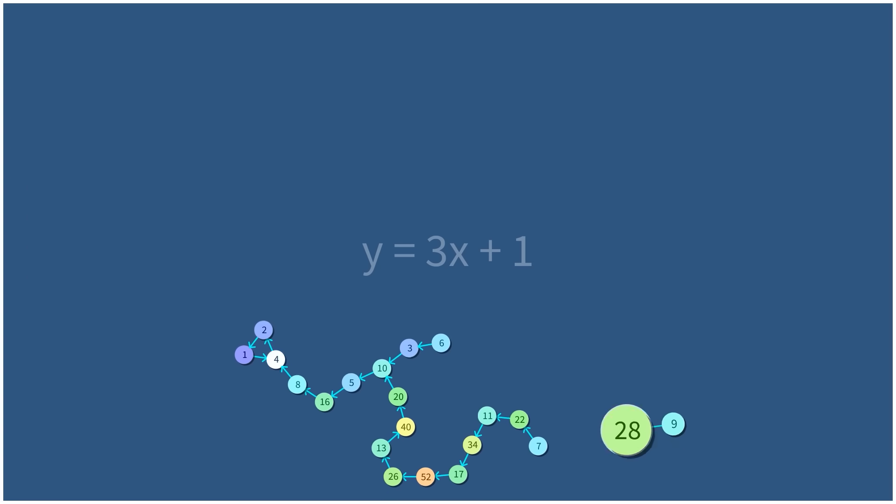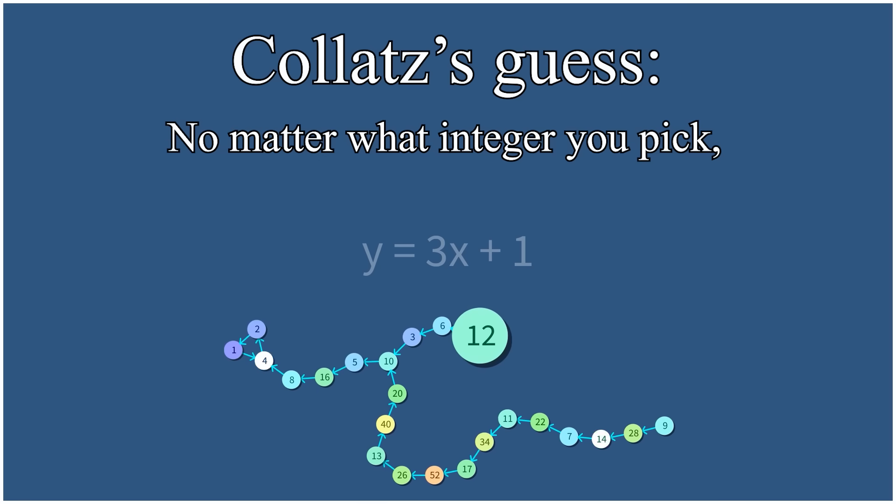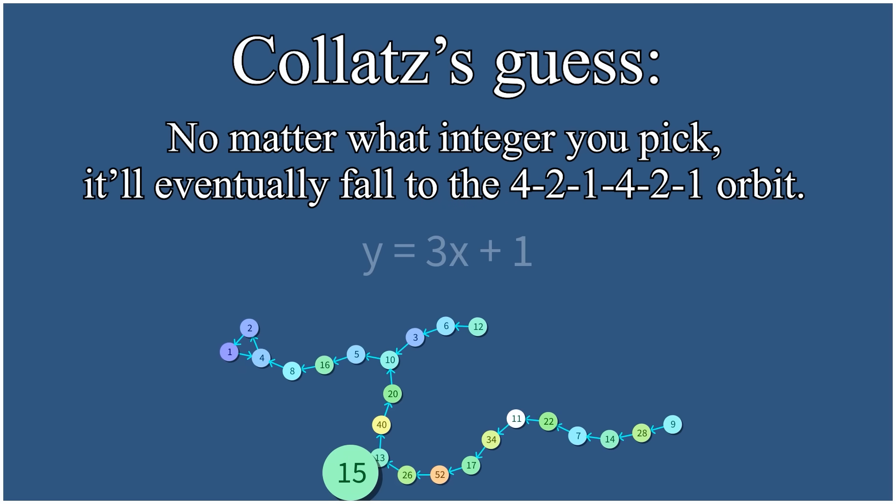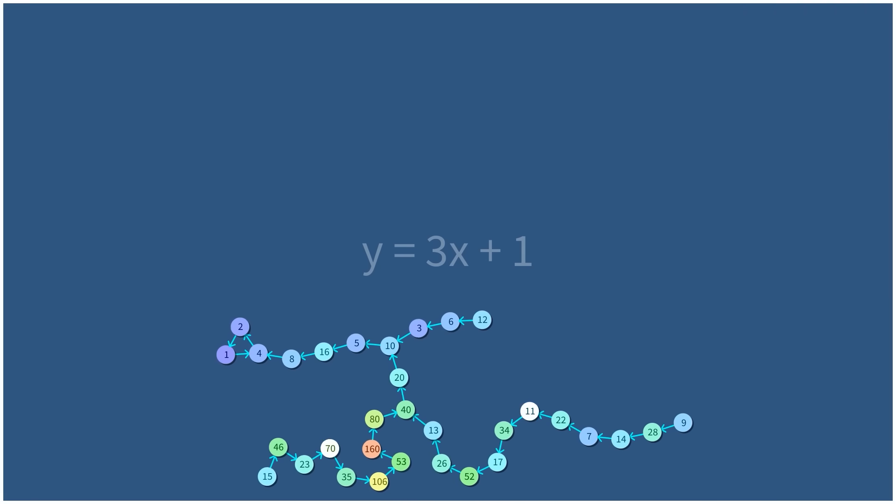Now, a conjecture is just an unproven educated guess, and the guess that Collatz made states that no matter what integer you pick at the beginning, you could pick 5 or you could pick 2 billion, will eventually fall towards the 421421 orbit. It might take hundreds of steps, but it's bound to happen at some point.